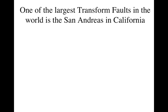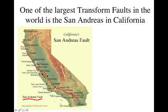Now one of the largest transform faults in the entire world is the San Andreas Fault, and it is right here in California. Here is a map of California, and you can see the San Andreas Fault. It is over 800 miles long. It goes from the northern part of California right past San Francisco, then jumps on land and goes through the middle of the state. Then it makes a turn and goes right past Palmdale and Palm Springs, and right down here there is a sea called the Salton Sea, and here is Los Angeles.